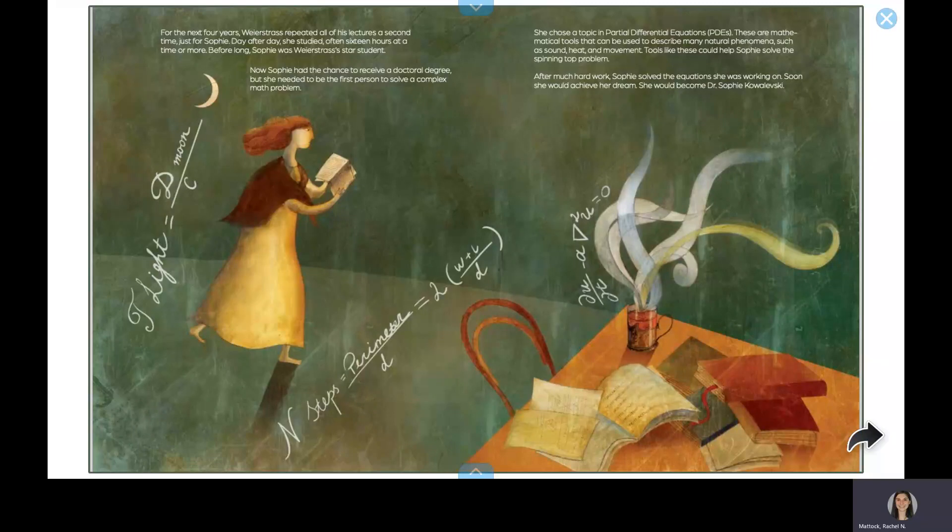Now Sophie had the chance to receive a doctoral degree. But she needed to be the first person to solve a complex math problem. She chose a topic in Partial Differential Equations, PDEs. These are mathematical tools that can be used to describe many natural phenomena, such as sound, heat, and movement. Tools like these could help Sophie solve the spinning top problem.